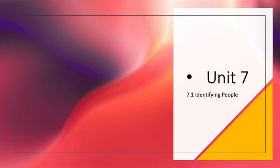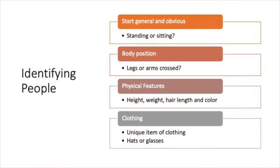Welcome to Unit 7. This unit focuses on identifying people and objects. Suppose you're in a room or area with many people and you want to identify someone. Start with something general and obvious. Are they standing or sitting? Is their body position notable?